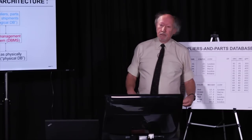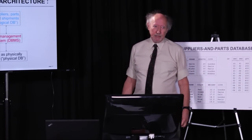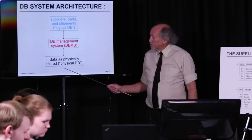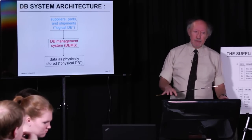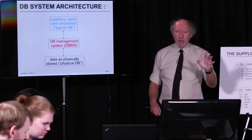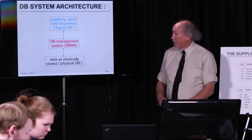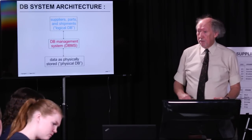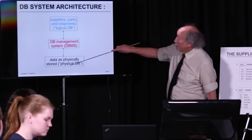This leads on to the notion of database system architecture. Up here we have the example — suppliers, parts, and shipments — and I've called that a logical database because, of course, physically inside the system the data is not represented exactly like that; there are all kinds of horrible sordid details of physical representation. We distinguish therefore between the logical database — the database as seen by the user — versus the physical database — the database as physically stored inside the system on disk. Down at the physical level there are stored files, indexes, and other details which you don't need to know about as a user.